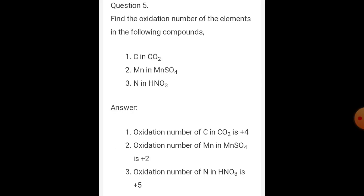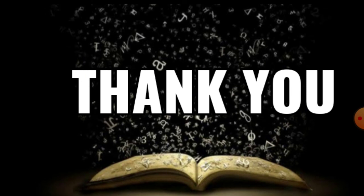Question number 5: find the oxidation number of elements in the following compounds. Carbon in carbon dioxide: +4. Magnesium in magnesium sulfate: +2. Oxidation number of carbon is C2+ and O2-. Manganese in manganese sulfate: +2. Nitrogen in nitric acid: +5. Thank you so much for watching.